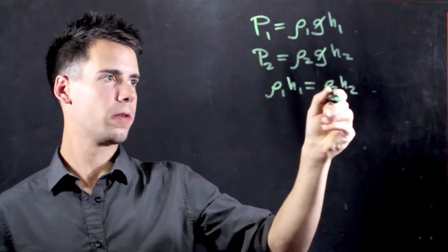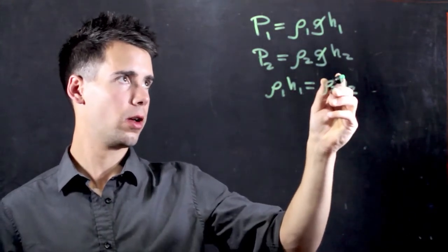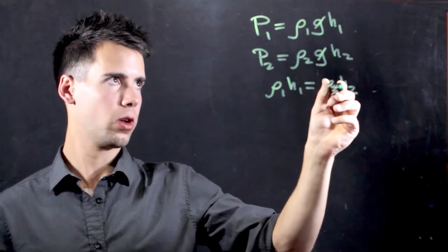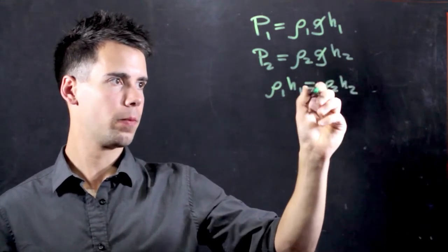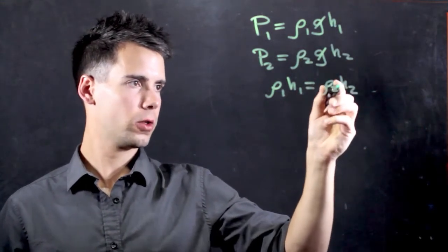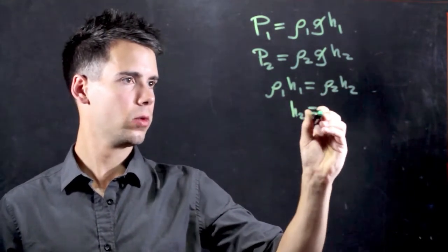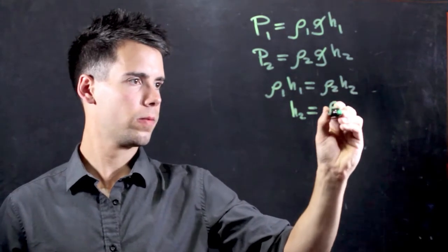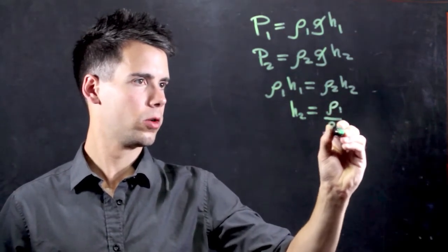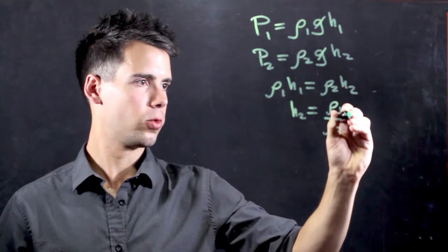Now, what we want to find is the ratio of millimeters of Mercury, MMHG, over Feet, or vice versa. So, if we solve for H2, we see that it's equal to Rho1 over Rho2 times H1.